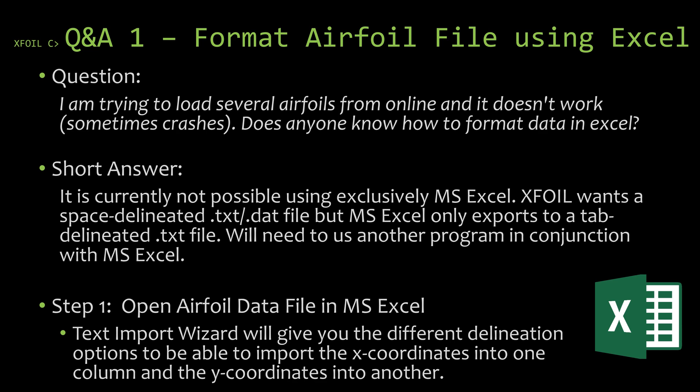For the long answer, we're going to run through a few steps in a tutorial style to show you how to format an airfoil coordinate file in Excel. The first thing you need to do is open up the airfoil coordinate file in Excel. The easiest way is to open Excel first and then open the file using Excel. Be careful when browsing for files to specify the file type as all files so that you can see it. I recommend using the Text Import Wizard, which gives you the option to choose how to break up the file into different columns, providing flexibility for files from different databases.